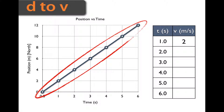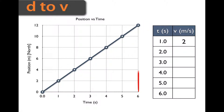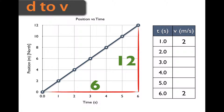So every one of these points is going to have a velocity of 2 meters per second. I'll show you what I mean — let's take the last point. The last point has a rise of 12 and a run of 6, so rise over run: 12 divided by 6 gives us 2 as well, or 2 meters per second.